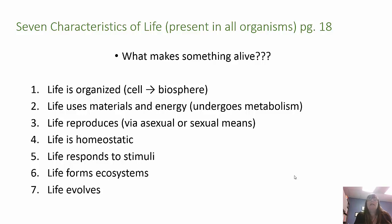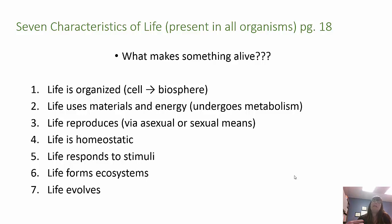What makes something alive? We have seven characteristics of life present in all organisms. Life is organized from the cell to the biosphere. Life uses materials and energy — it undergoes metabolism. Life reproduces, whether asexual or sexual. Life is homeostatic, maintaining a steady internal state. Life responds to stimuli — if you couldn't sweat when it was hot, that would not be very effective. Life forms ecosystems, and life evolves — it adapts and changes over time.